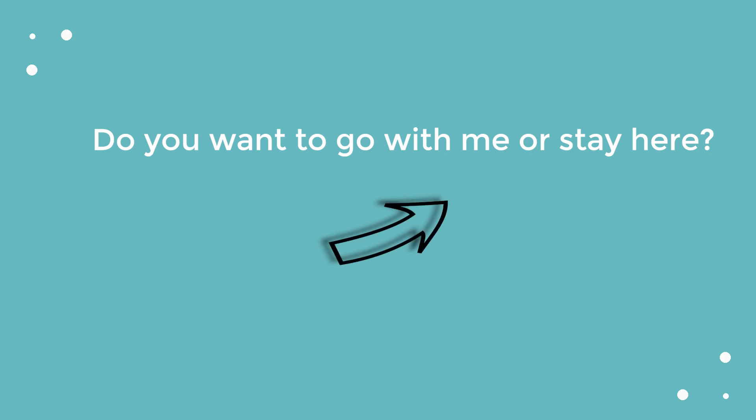The intonation is going to rise on the first proposition — in our example, 'go with me.' Do you want to go with me? Here, it's a bit louder and a bit higher in pitch. But then the intonation falls on the second proposition: 'or stay here.' So listen and then repeat after me. Do you want to go with me, or stay here? Do you want to go with me, or stay here?